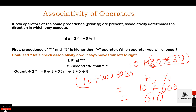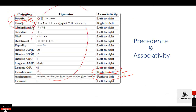Operator associativity is used when two operators of the same precedence appear in an expression. Associativity can be either from left to right or right to left. For example: 100 / 5 % 2. Here both the division and modulus operators have the same precedence, so the order of evaluation is decided by associativity. According to the table, the associativity of multiplicative operators is from left to right.